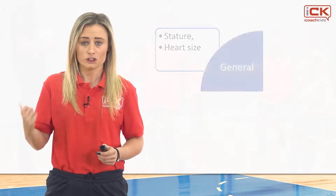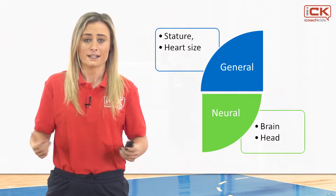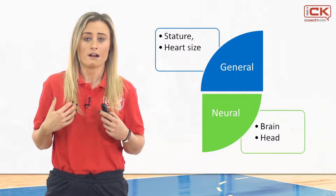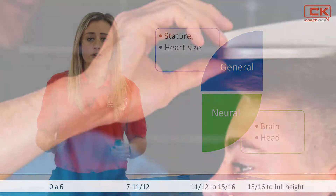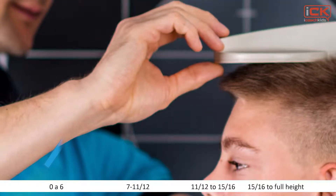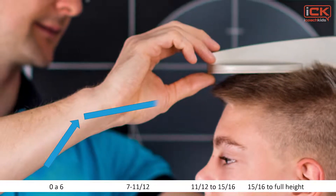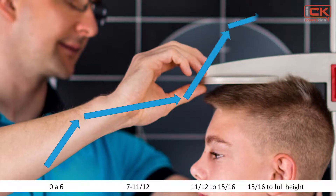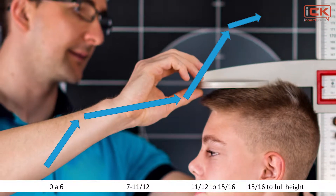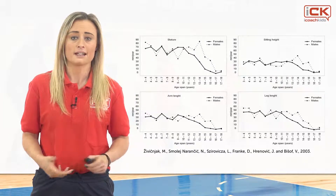The main two types of growth we'll focus upon here are general growth and neural growth. General growth reflects the external, e.g. height, and internal, heart and lungs, growth that occurs in the body. For a coach, the two most important types are height and mass. Height and mass increase rapidly in the first few years of life and then plateau off. There's then a steady period of growth until the growth spurt which we'll focus upon later. Have a look at the growth charts for typical sizes of boys and girls.